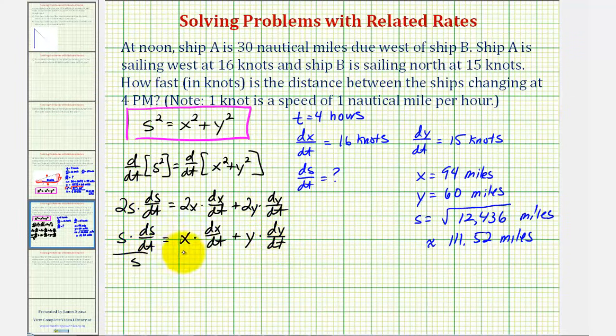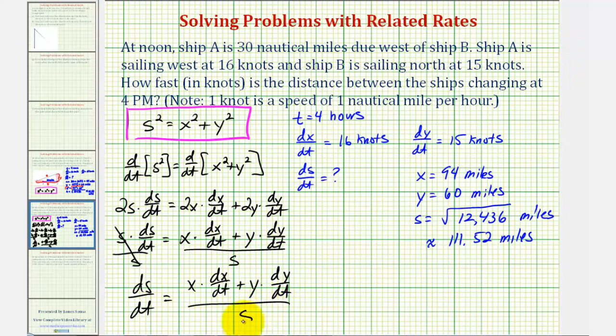So we have dS/dt equals X times dX/dt plus Y times dY/dt divided by S.